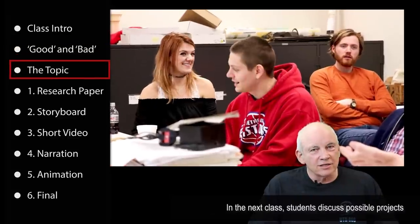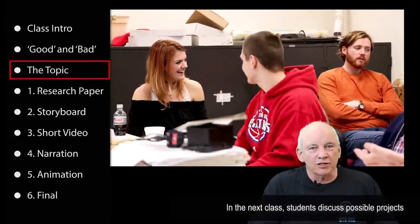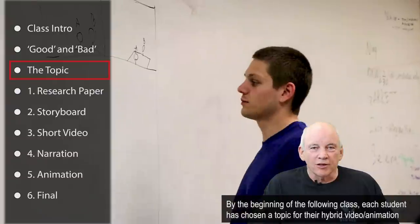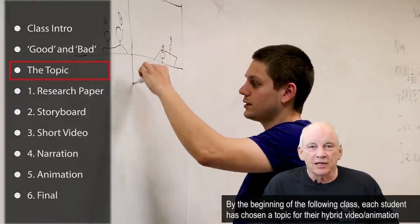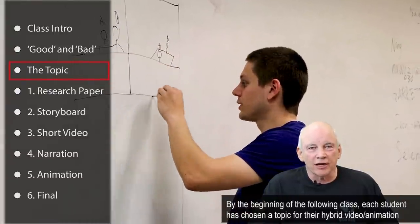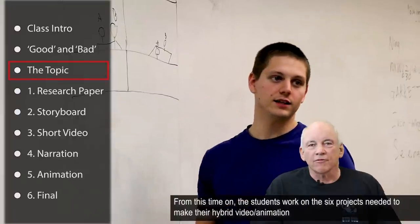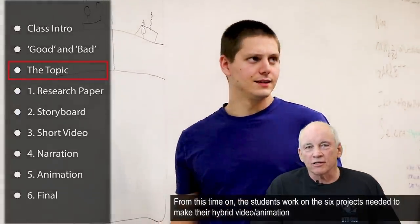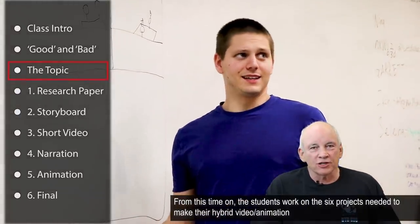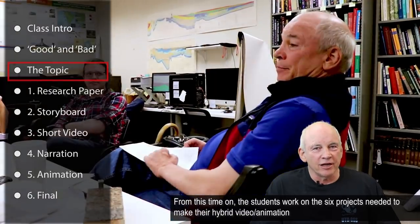In the next class, students discuss possible projects. By the beginning of the following class, each student has chosen a topic for their hybrid video animation. From this time on, the students work on the six projects needed to make their final hybrid video animation.